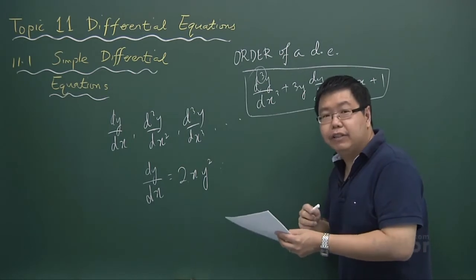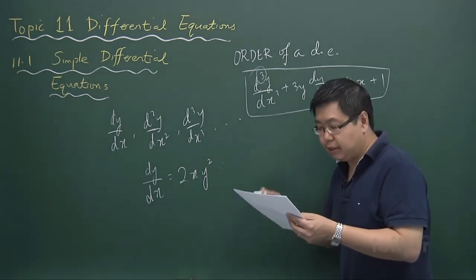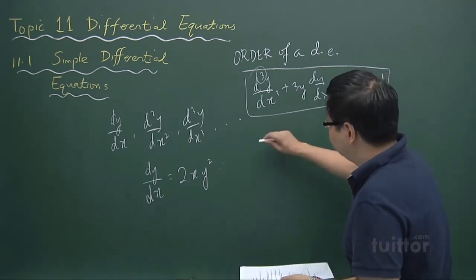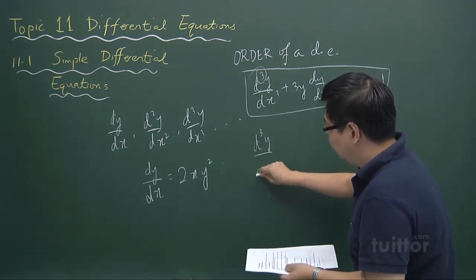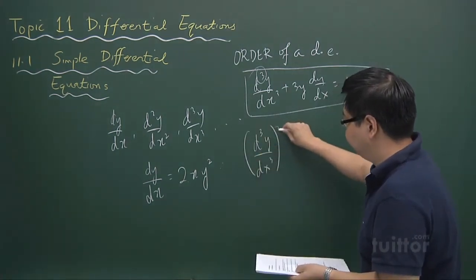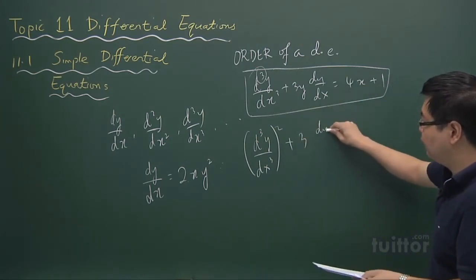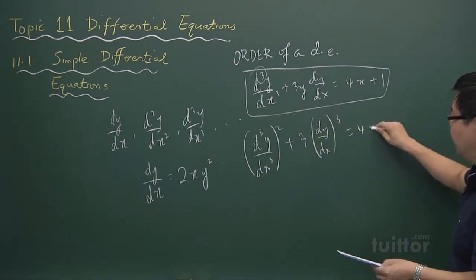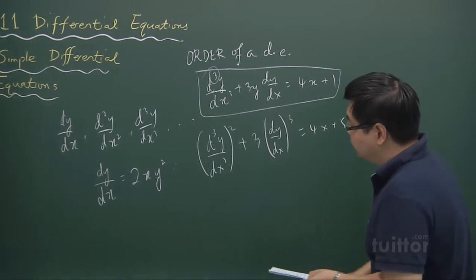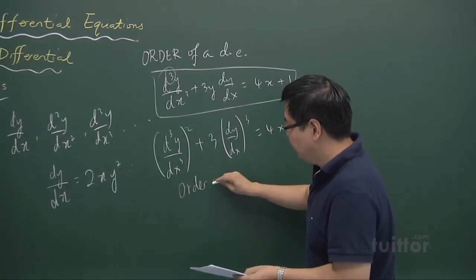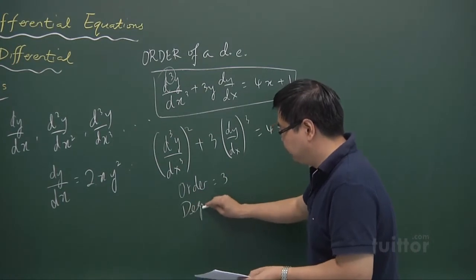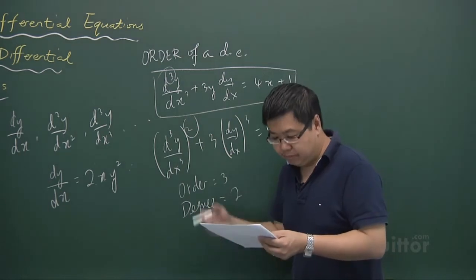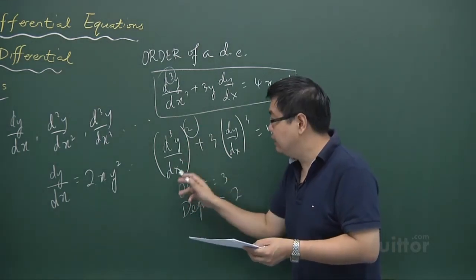Then what is the degree of the differential equation? The degree of the differential equation is the power of the highest derivative which occurs in it. For example, if you have (d³y/dx³)² plus 3(dy/dx)³ equals 4x plus 5, the order will be 3 and the degree will be 2, because it is the power of the highest derivative term.